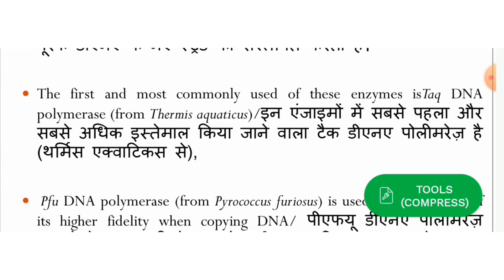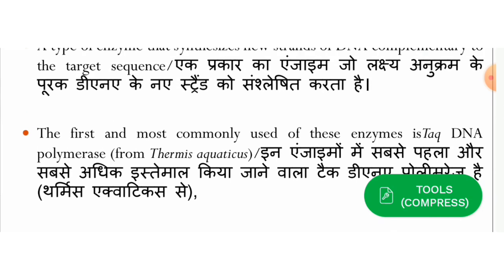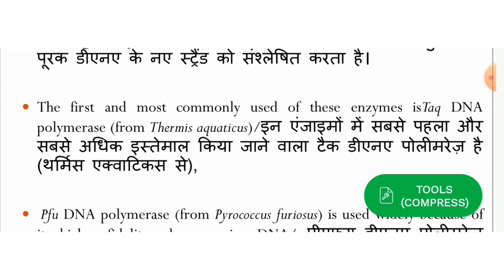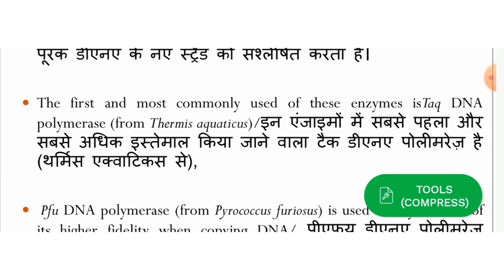The first and most commonly used enzyme is Taq DNA polymerase, which was the first enzyme used in PCR as a DNA polymerase. 'Taq' stands for Thermus aquaticus — it is isolated from the bacteria Thermus aquaticus, which is why it is called Taq DNA polymerase.